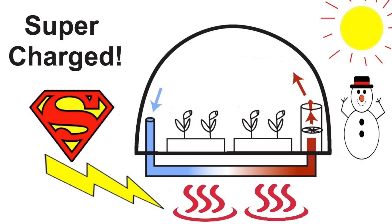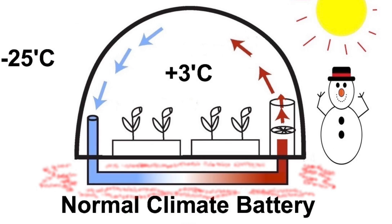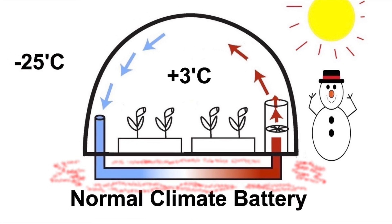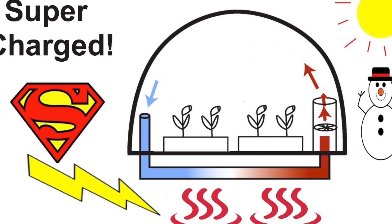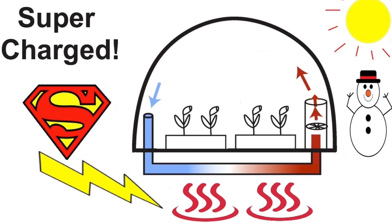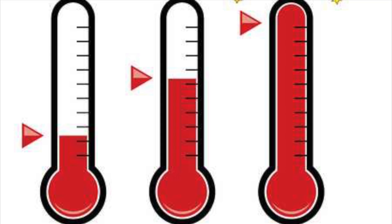The ground will slowly heat up much more than a conventional climate battery. A conventional climate battery can only heat the ground to a maximum of 25 to 30 degrees Celsius. A supercharged climate battery can increase the ground temperature to as much as 70 or 80 degrees Celsius.